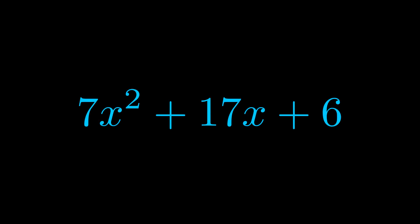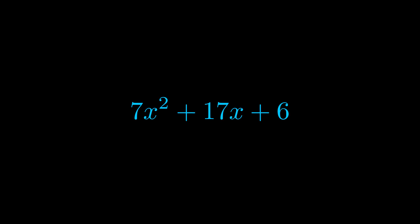Step one when factoring an equation of this form is to multiply the a value by the c value. Here we can see that our a value is the coefficient on the x squared term and our c value is the constant term.